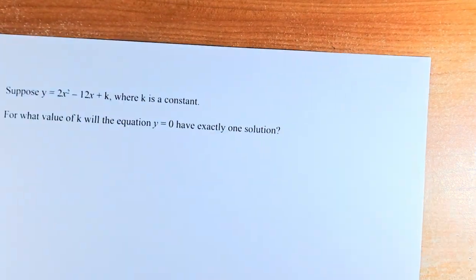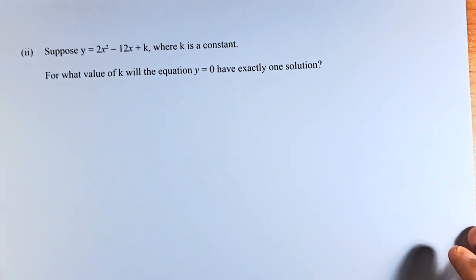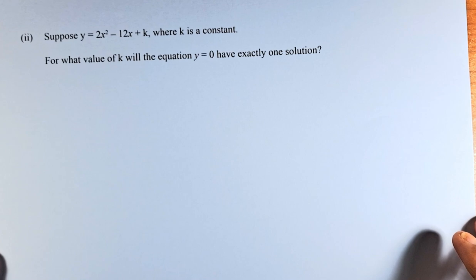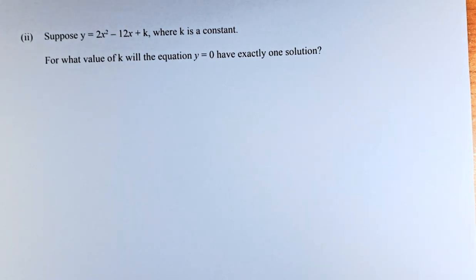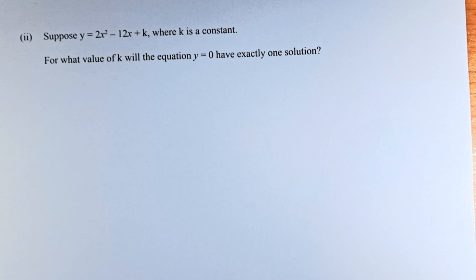So part 2 will look like this. I am going to bring the paper down. So part 2, we shall read the question. The question sounds like this: Suppose y = 2x² - 12x + k, where k is a constant. For what value of k will the equation y = 0 have exactly one solution?